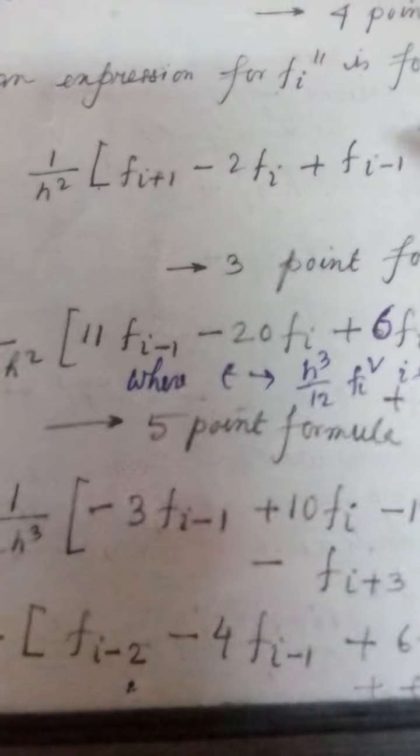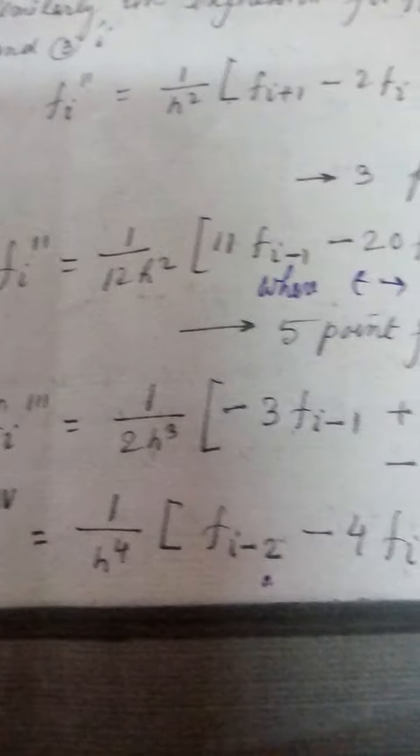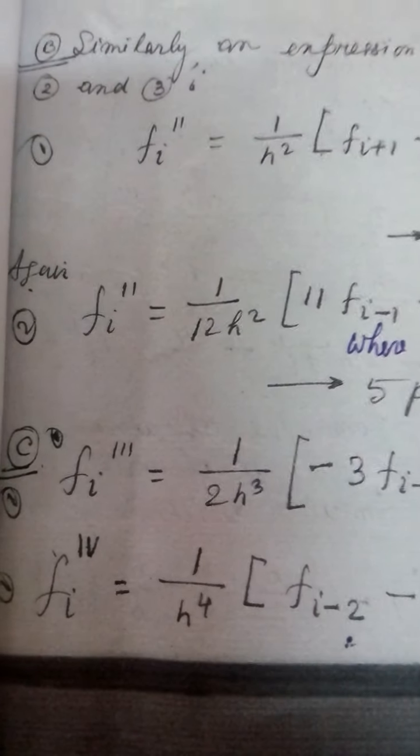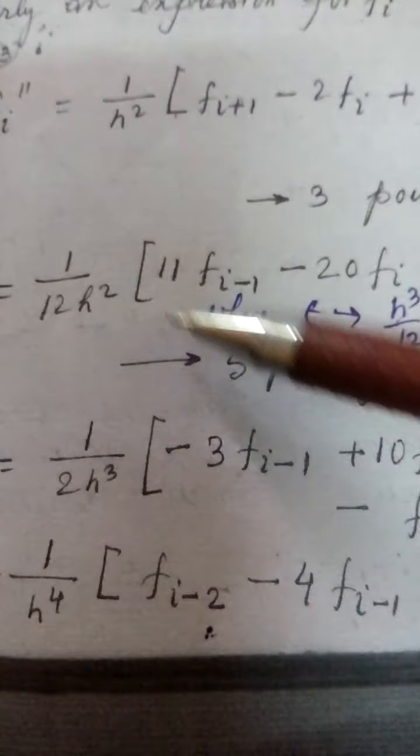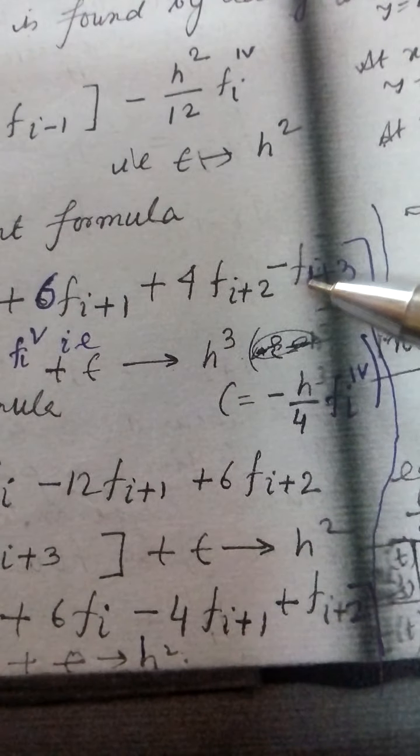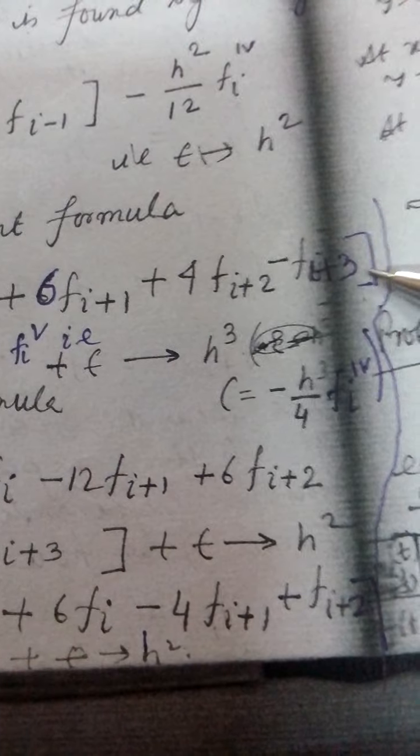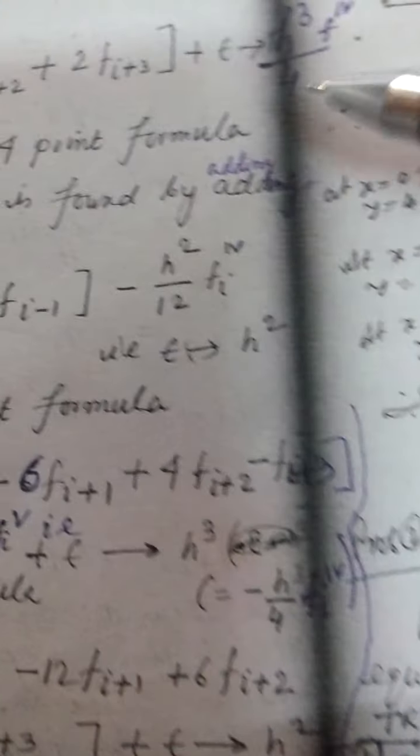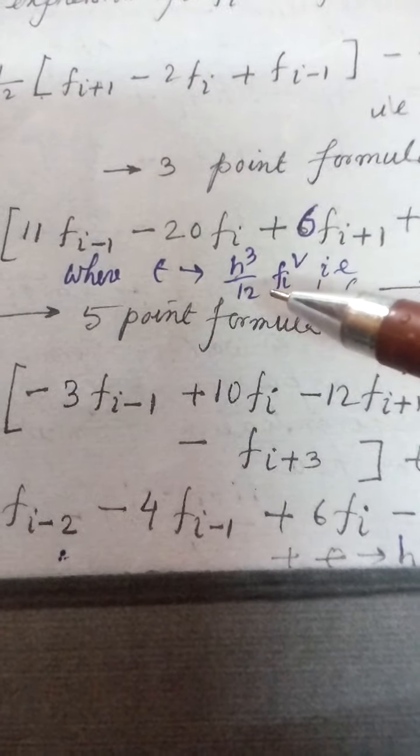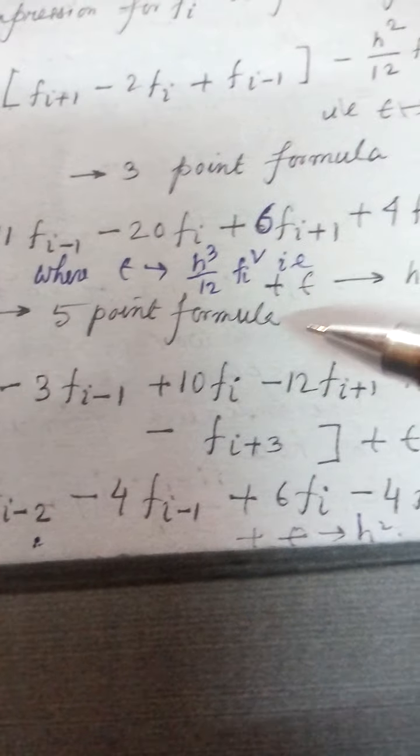Three point, one, two, three in this way. So f i double dash is equal to one. One, two, three, four, five, this is minus f i plus 3. Epsilon in the order of f i 4, that is epsilon in the order of h cube. This is called the 5 point formula.